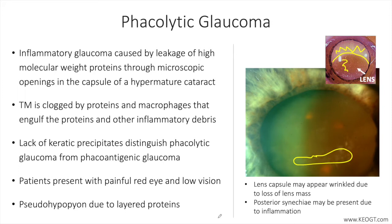We will cover other lens-induced glaucomas in subsequent lectures. From a treatment standpoint, the immediate goal is to decrease IOP and inflammation. Several topical IOP-lowering drops are usually required to lower pressure, including prostaglandin analogs, beta blockers, and carbonic anhydrase inhibitors, among others.